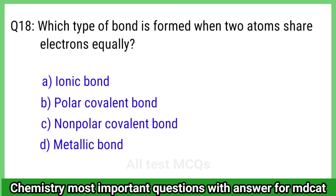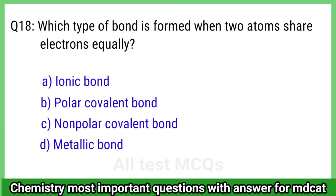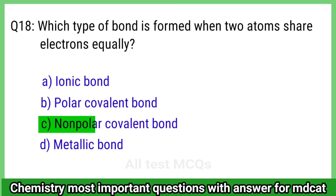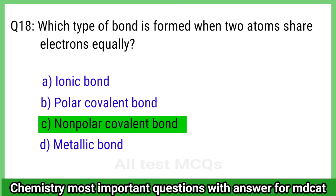Question 18: Which type of bond is formed when two atoms share electrons equally? The right answer is option C, non-polar covalent bond.